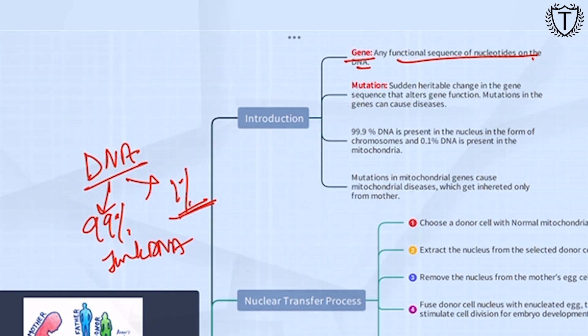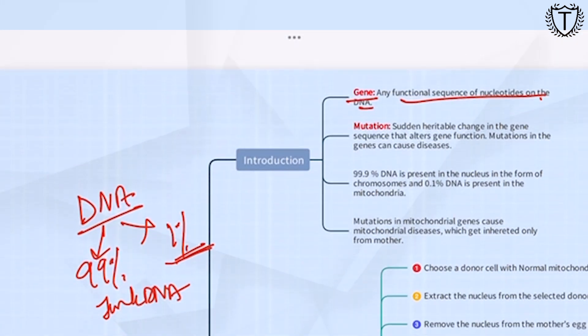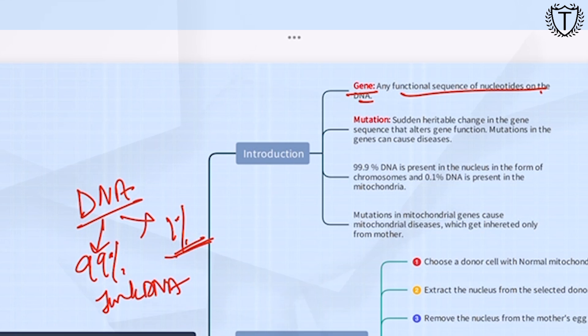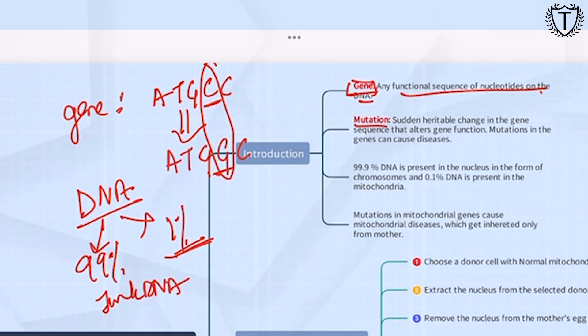But what happens sometimes during the process of replicating, the gene undergoes a certain mutation. To understand this, let us assume that a gene is a word like ATGCC. During the process of replicating, it turns into ATGGC. This error, this spelling mistake, is a mutation. This mutation leads to a lot of diseases.